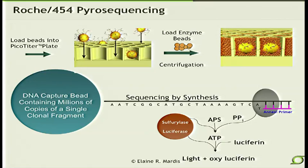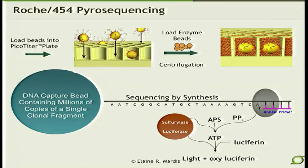When a nucleotide gets incorporated, a pyrophosphate moiety is released. That goes through a series of downstream reactions catalyzed by enzymes on the bead, and the output is essentially light. That light is detected by the CCD camera, which knows all the positions of all the wells that are emitting in these first four key sequences and records that cycle by cycle by cycle. We run these cycles effectively for several hundred times to generate the read lengths obtained from this sequencing instrument.